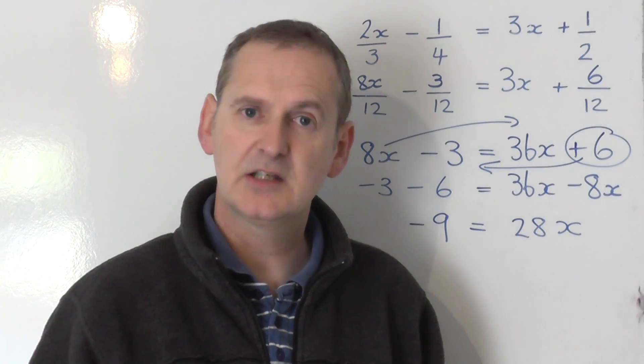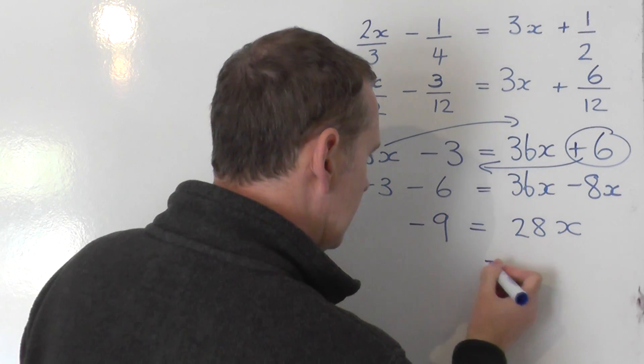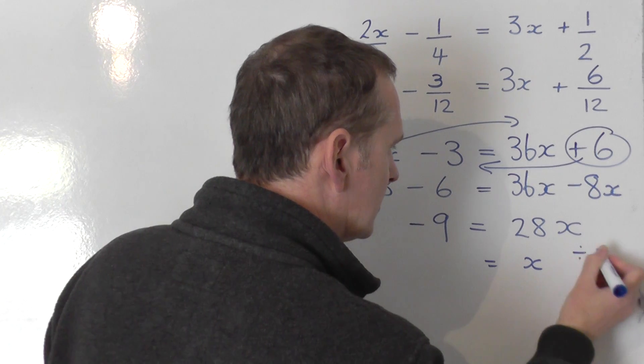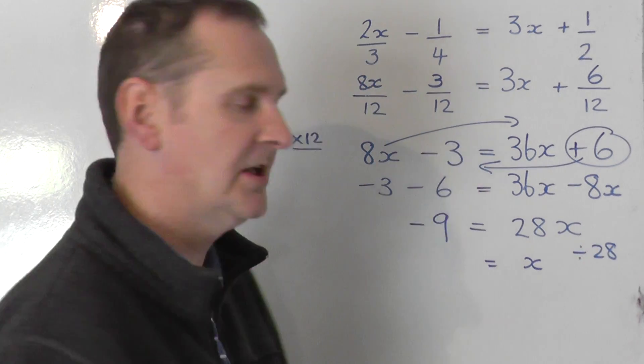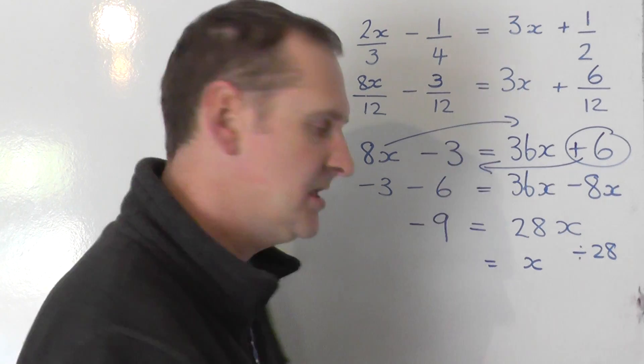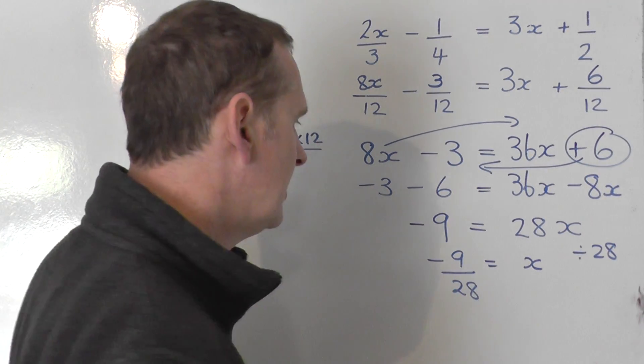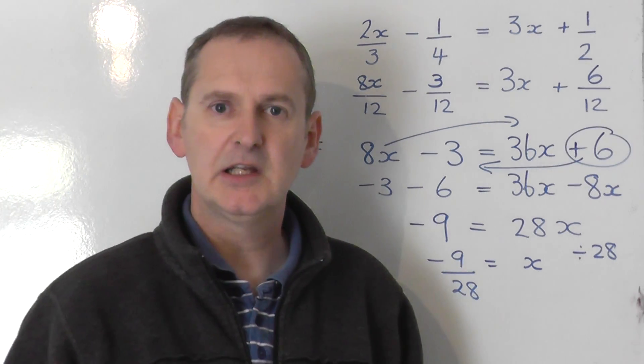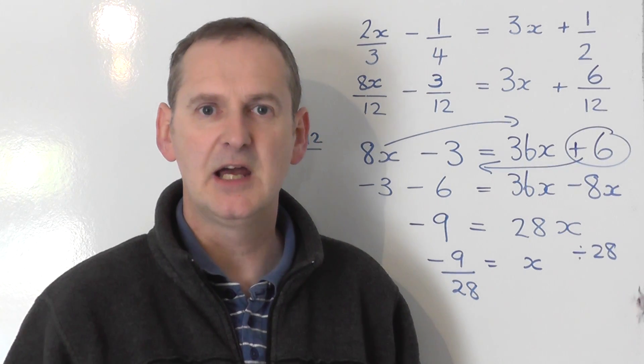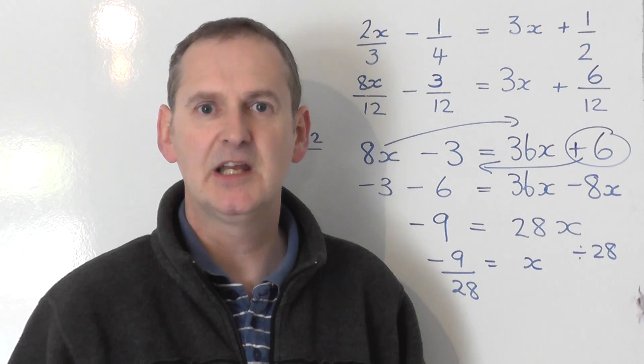But I don't want 28x. I want x. So finally, to go from 28x to x, you share the right by 28. So you share the left by 28. You take the minus 9, and you share it by 28. That's not a nice number, so let's leave it as a fraction. Minus 9 over 28. And that's the answer to this equation.